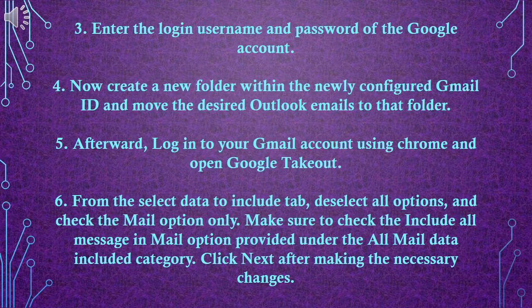Step 4: Now create a new folder within the newly configured Gmail ID and move the desired Outlook emails to that folder. Step 5: Afterward, log in to your Gmail account using Chrome and open Google Takeout. Step 6: From the Select Data to Include tab, deselect all options and check the Mail option only. Make sure to check the Include all messages in Mail option provided under the All Mail Data included category.